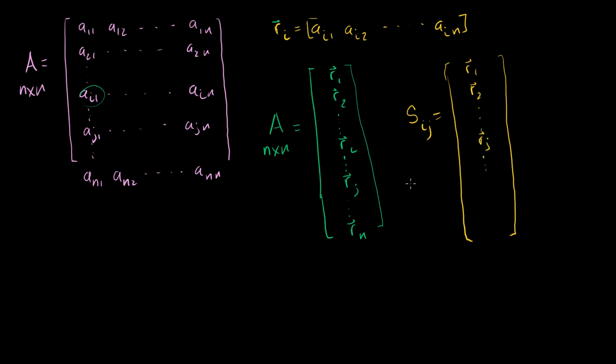You have a row j and you go down. Instead of a row j, you have a row i there. You have a row i there and you go down and then you get an rn. So what did we do? We just swapped these two guys. That's what the swap matrix is.